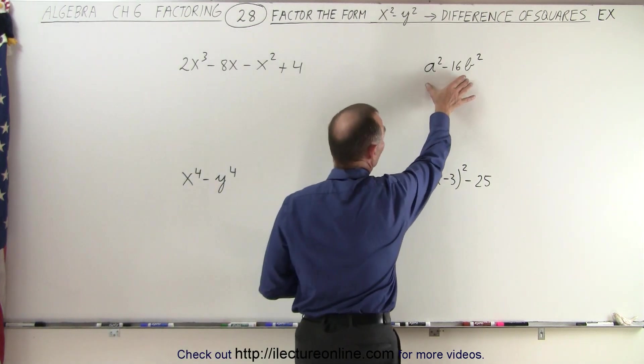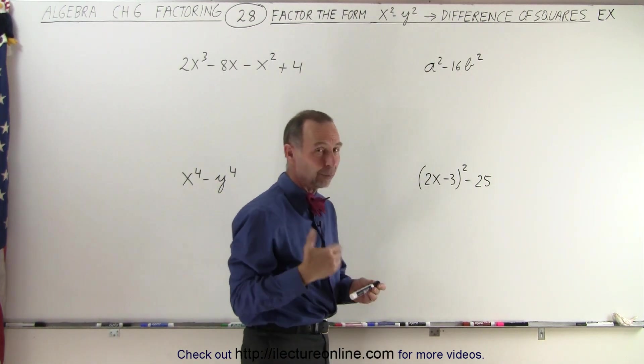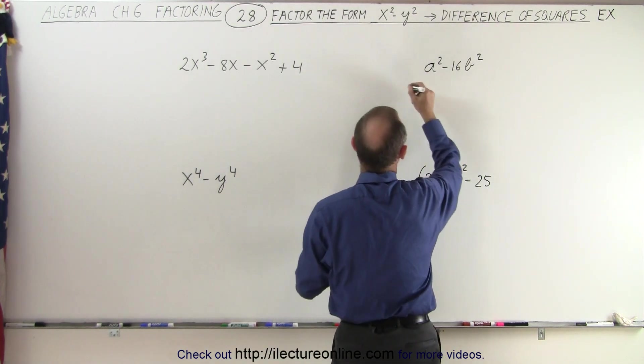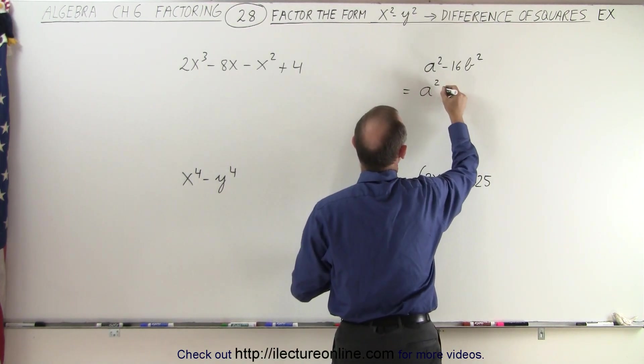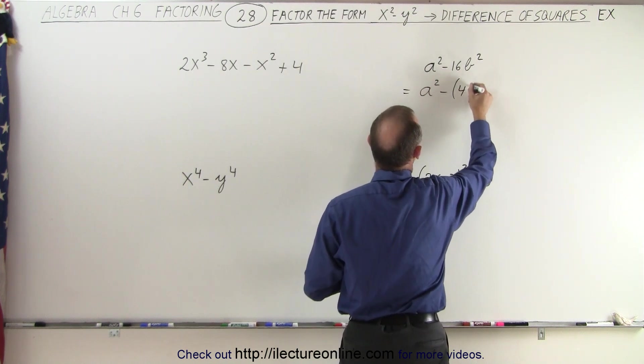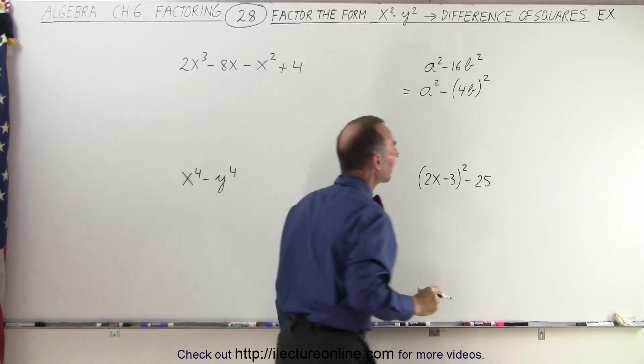For example, over here, a² minus 16b², we can rewrite this as follows. We can rewrite this as a² minus the quantity 4b quantity squared, like that.